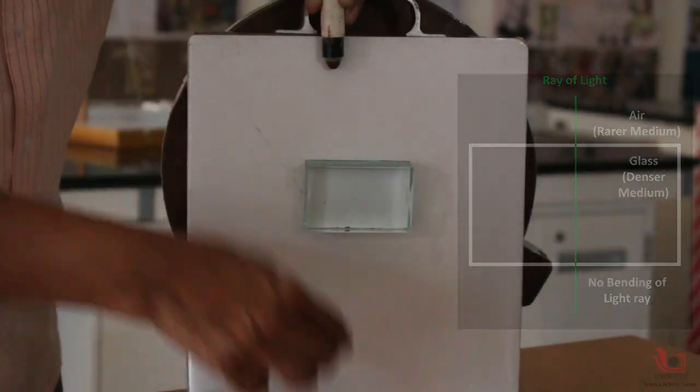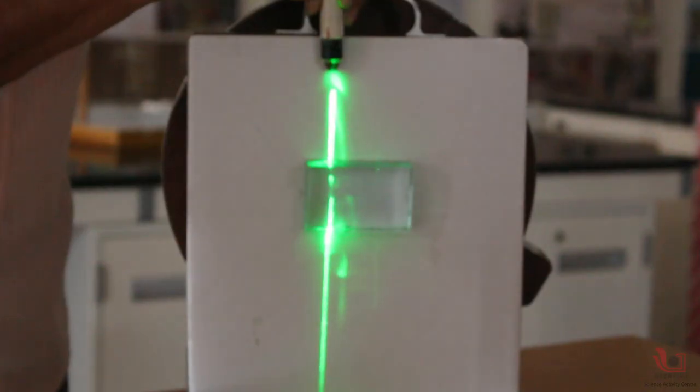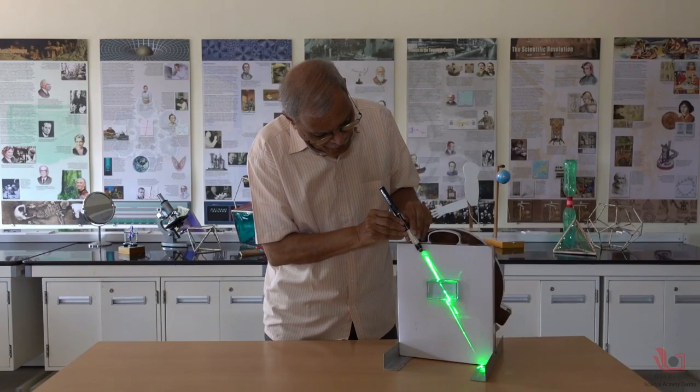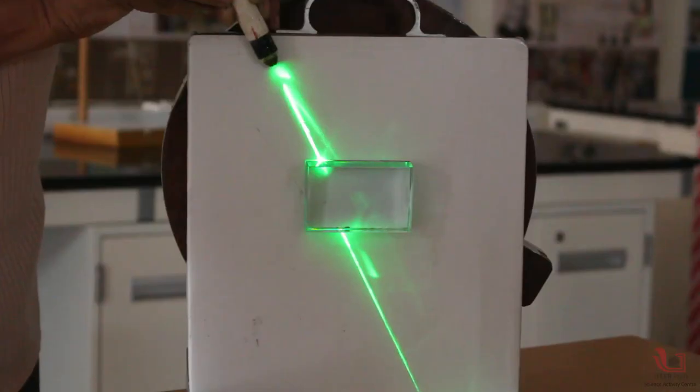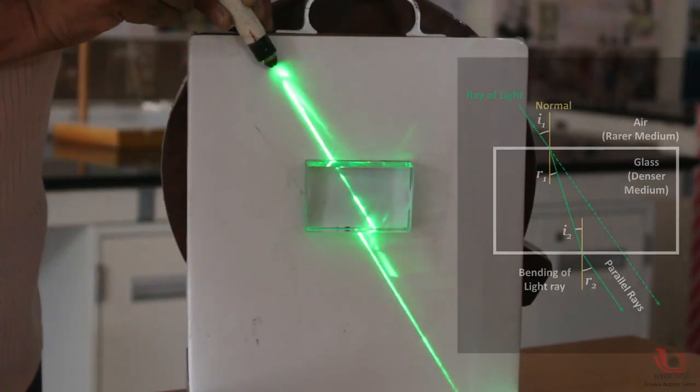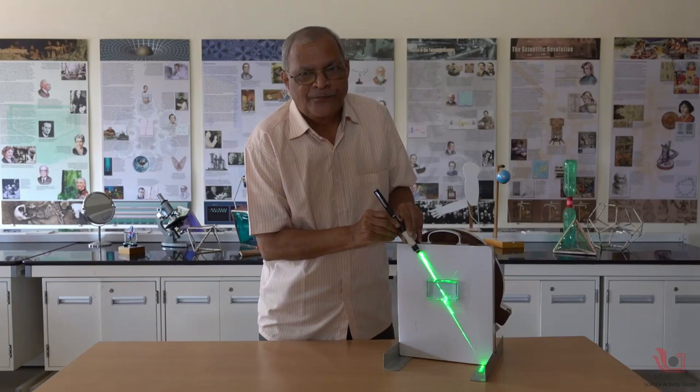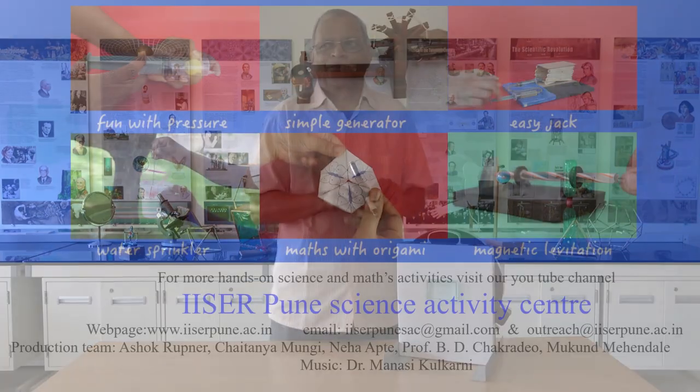It goes perpendicular out. There is no change of path, no change of direction because it is normal incidence. If it is an oblique incidence, we observe that there is change of path, and the incoming ray and outgoing ray are parallel to each other because this is a rectangular glass slab. Thank you.